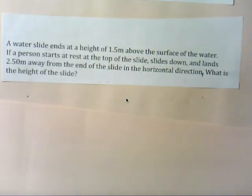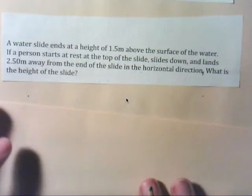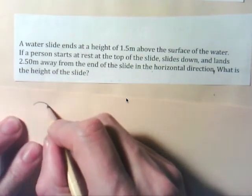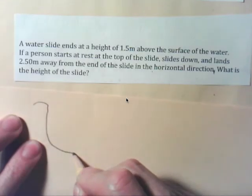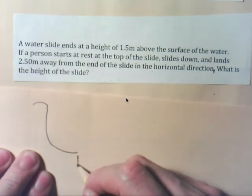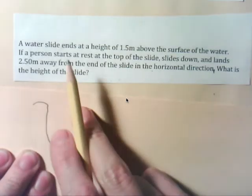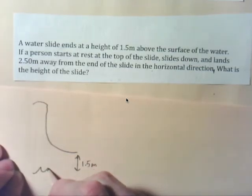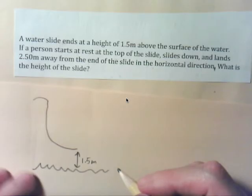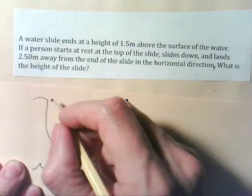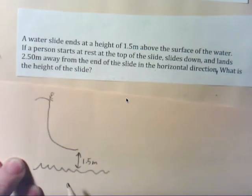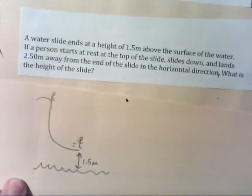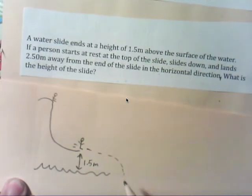Okay, so the first thing I'm going to do is draw a picture and make sure that everything I'm thinking matches reality, what I would expect to happen. So I have a slide, and we're not sure about the height of that slide, but we do know that it ends 1.5 meters above the surface of the water. We also know that someone starting at rest up here and sliding off the end of this slide will land 2.5 meters away.